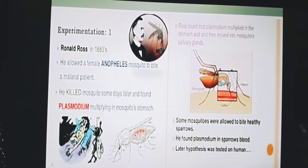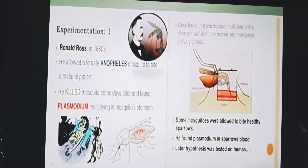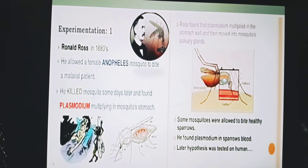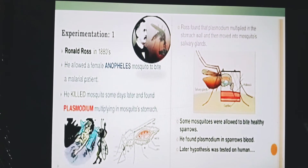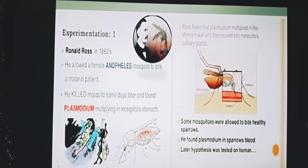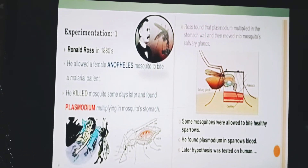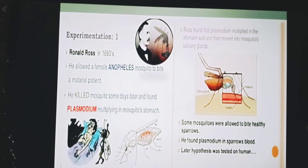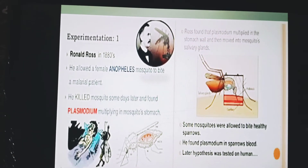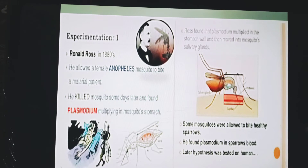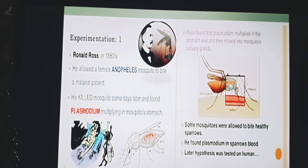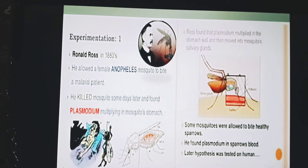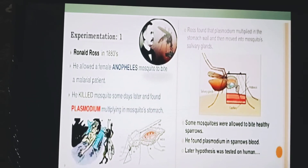In order to test the above deductions, Ronald Ross, a British army physician working in India in the 1880s, performed important experiments. He allowed a female Anopheles mosquito to bite a malarial patient. He killed the mosquito some days later and found plasmodium multiplying in the mosquito's stomach.